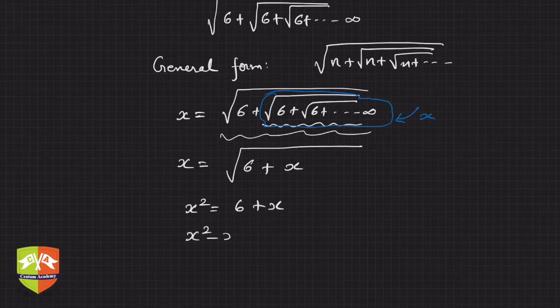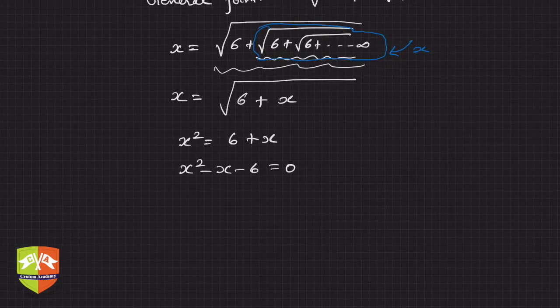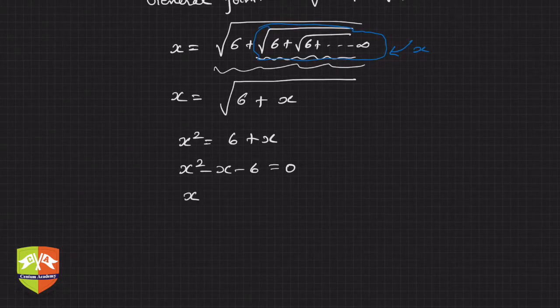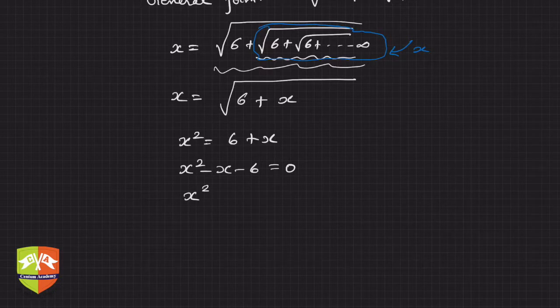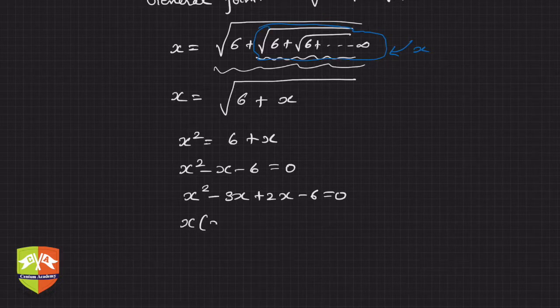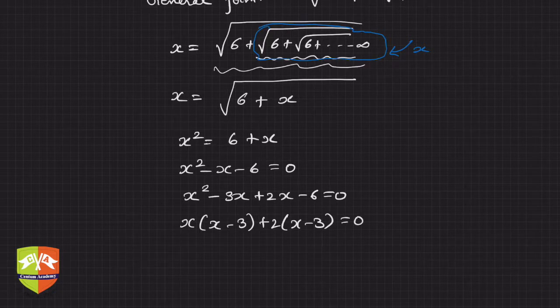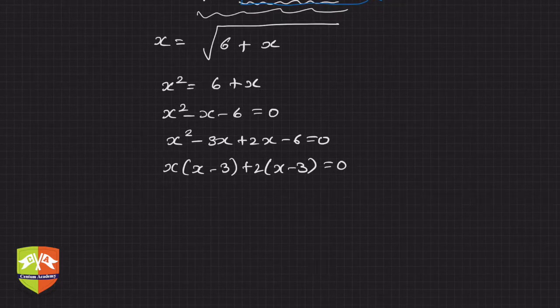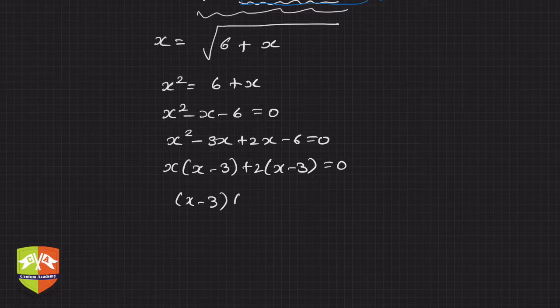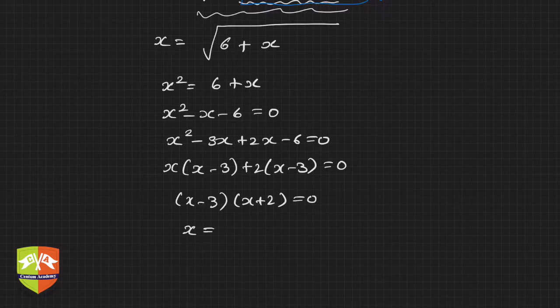So hence there are two roots. So x square minus 3x plus 2x minus 6 equals 0. So this is x times x minus 3 plus 2 times x minus 3 equals 0, right? So hence what is this? This is nothing but x minus 3 times x plus 2 equals 0. So finally what will the value of x be? x is 3 or x is minus 2.